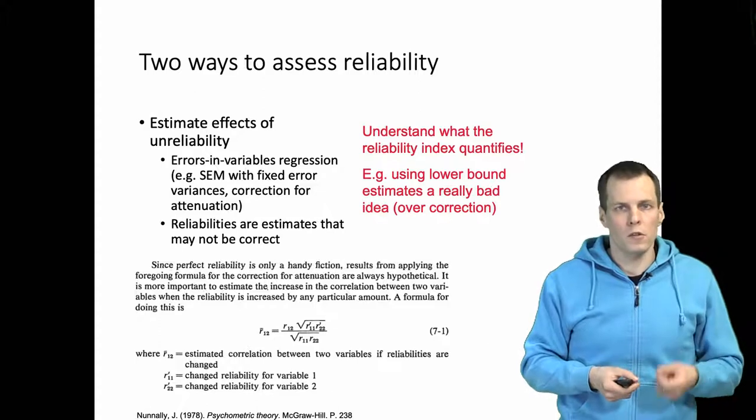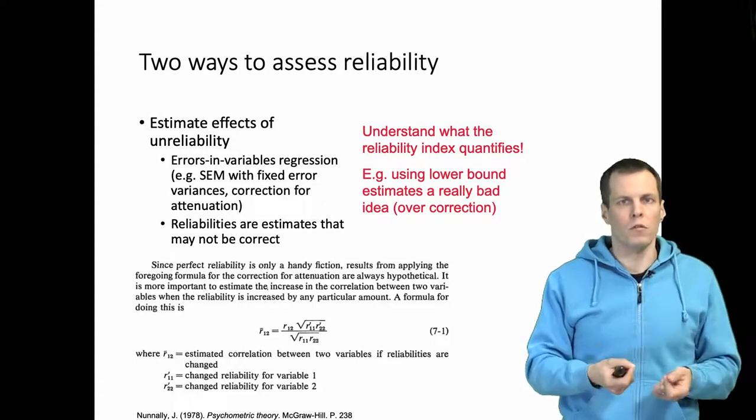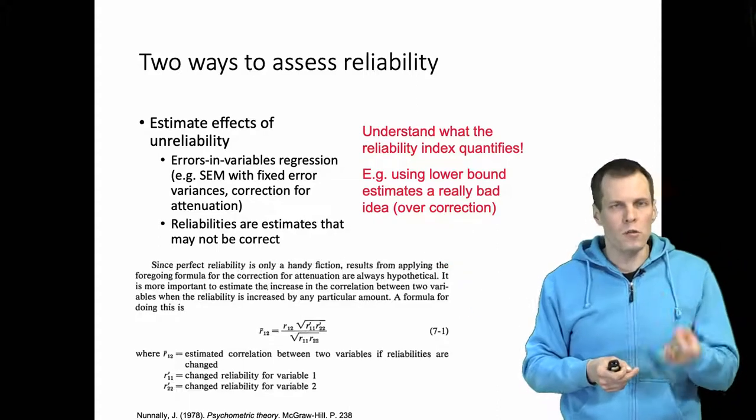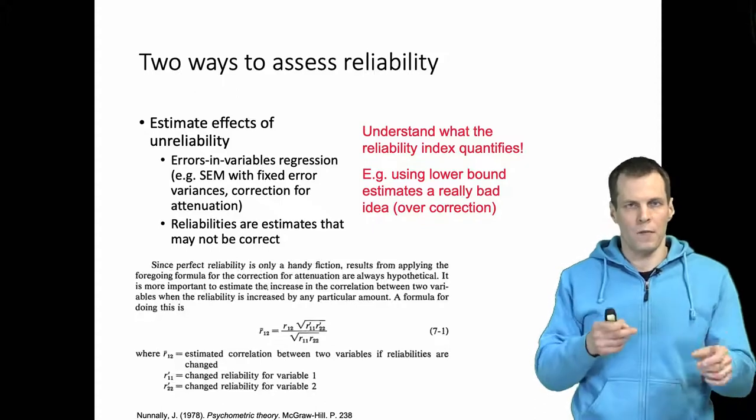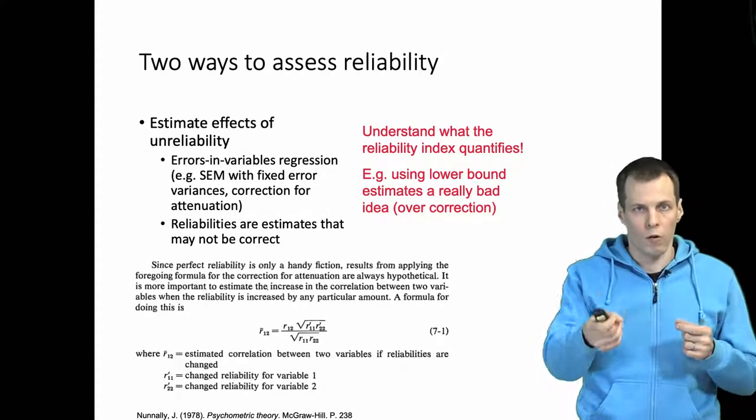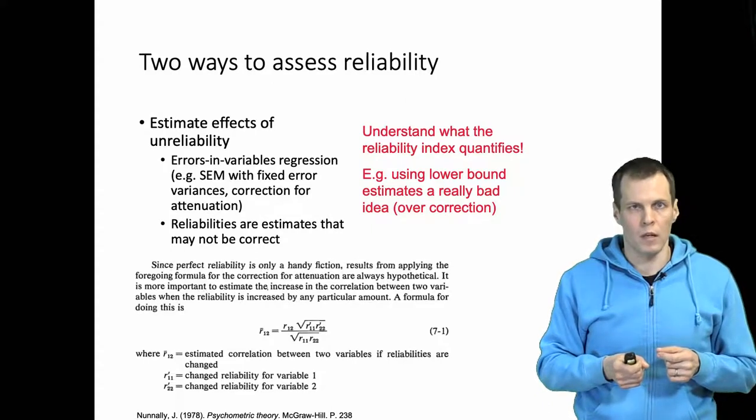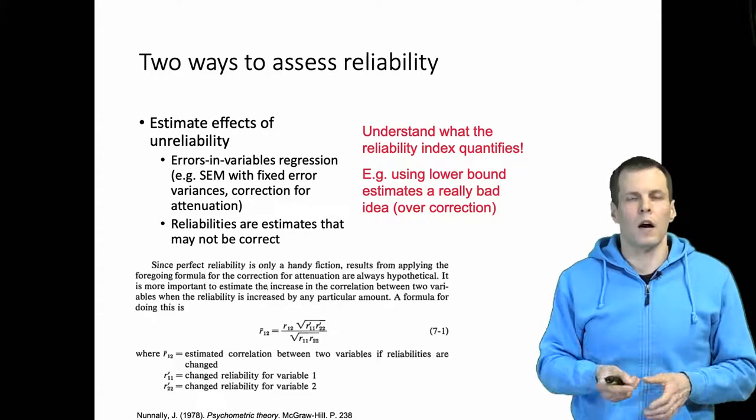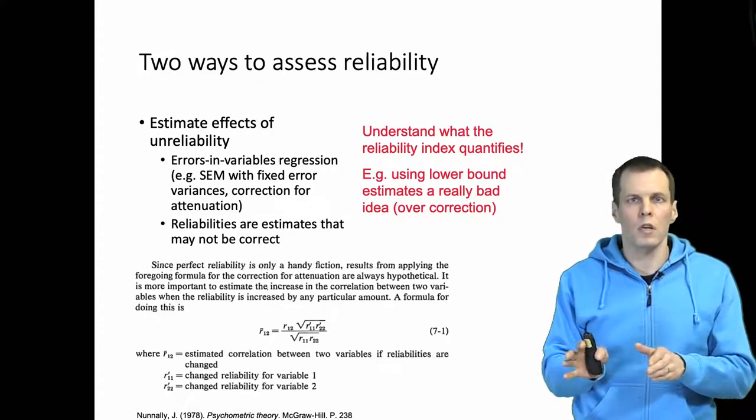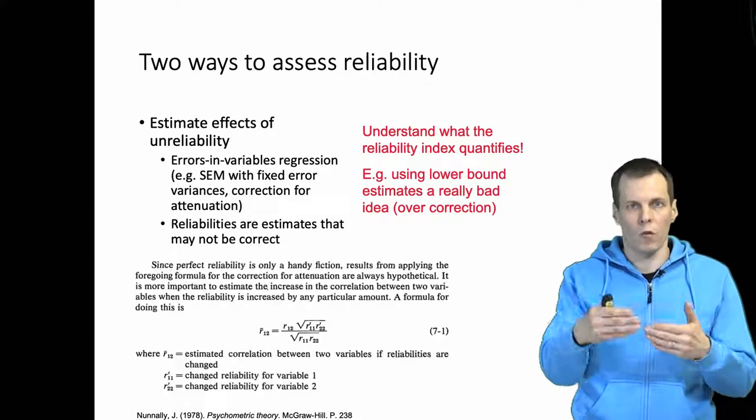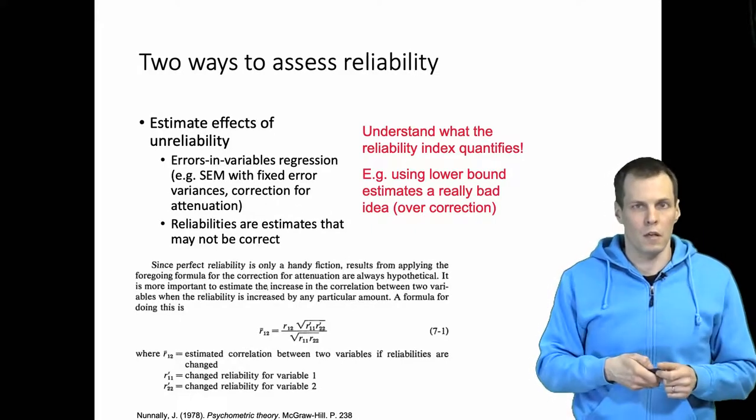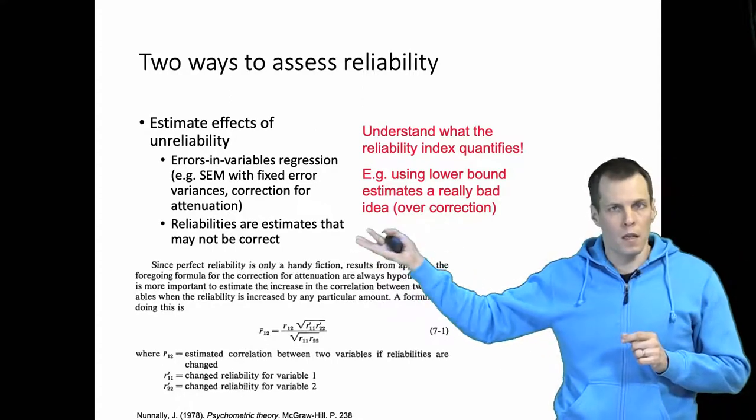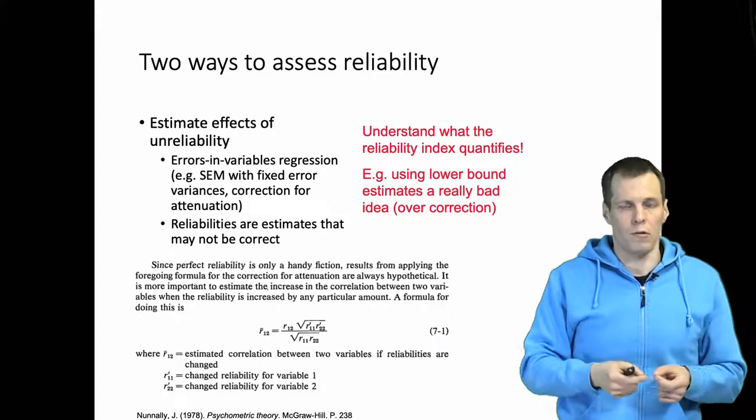One thing is clear: you should never use a lower bound estimate. For example, the greatest lower bound—using that is going to underestimate reliability, and if you underestimate reliability, then you are over-correcting the regression estimates for unreliability. Same with coefficient alpha: it tends to underestimate reliability unless the tau-equivalence assumption holds, and if so, then you are over-correcting, which means that you are overestimating the correlation.